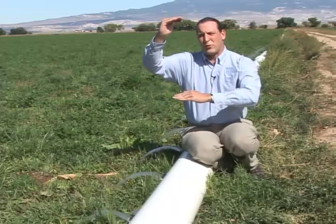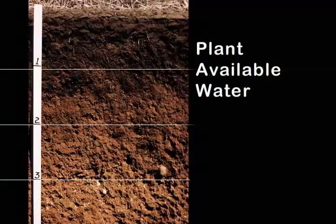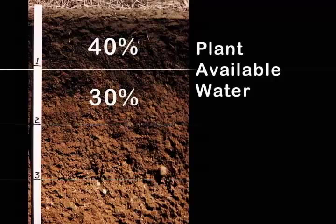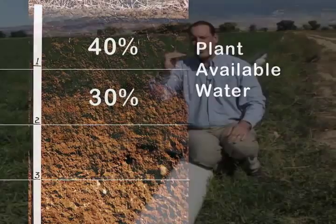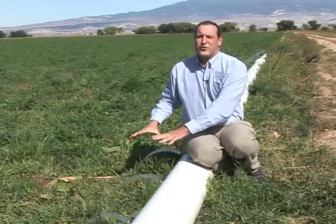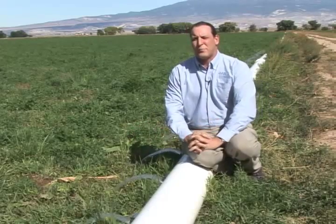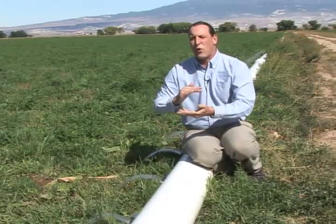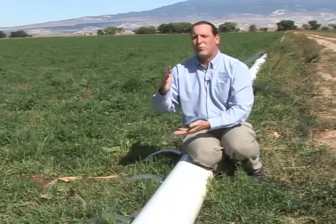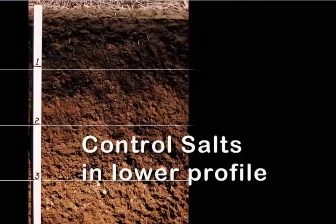When you look at a root zone for a typical crop, you can divide it into quarters — the top quarter, the second quarter, the third quarter, and the bottom quarter. Seventy percent of the plant available water is going to come out of the top half of that root profile, with forty percent in the top quarter and thirty percent in the second quarter. So having a higher concentration of salts low in the root zone is not really going to have any detrimental impacts on crop growth. That's kind of the goal of what we're trying to do with management with regard to salt — control those salts in the lower part of the profile.